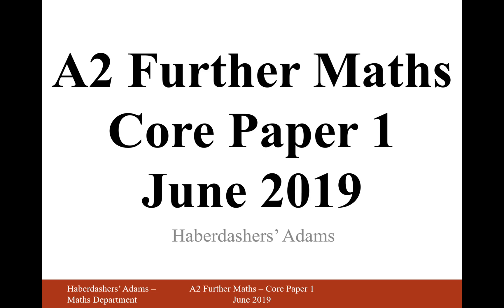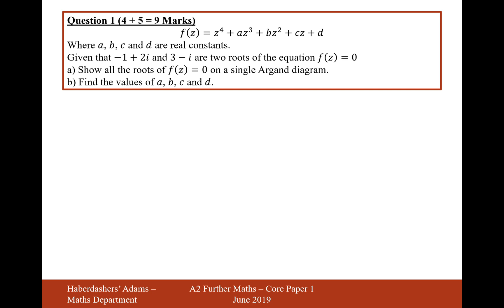Hello there, welcome to your June 2019 paper. We're looking at core paper 1, question 1. We've got a function f(z) equals this expression, where a, b, c, and d are real constants. Given that -1+2i and 3-i are two roots of the equation f(z)=0, show all the roots of f(z)=0 on a single Argand diagram. For part a,